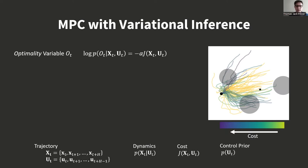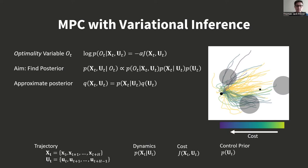First, we introduce optimality variable O. The goal is then to find a posterior distribution over low-cost control sequences. We use variational inference to approximate this posterior, minimizing the KL divergence between our approximation and the true distribution. This results in the following objective, where we minimize the cost of samples while also maximizing the entropy.